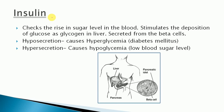Insulin is the hormone secreted from the beta cells. You can see in the diagram these are the cells which secrete hormones. The function of insulin is to check the rise in sugar level in the blood. When the sugar level increases, insulin is secreted to maintain it by stimulating the deposition of glucose as glycogen in the liver, thereby decreasing the blood glucose level.